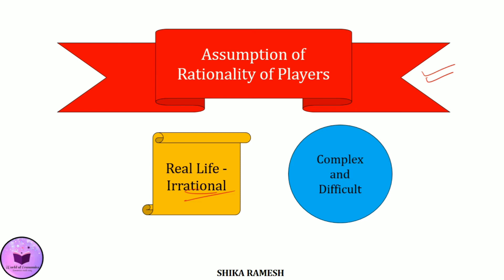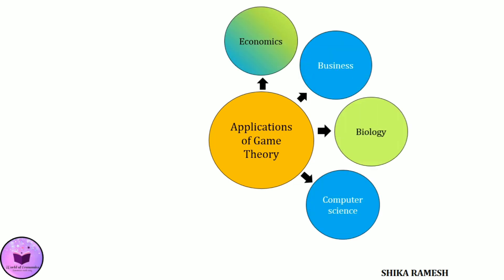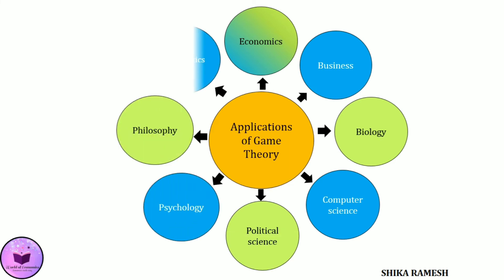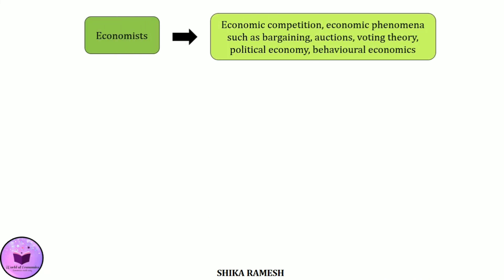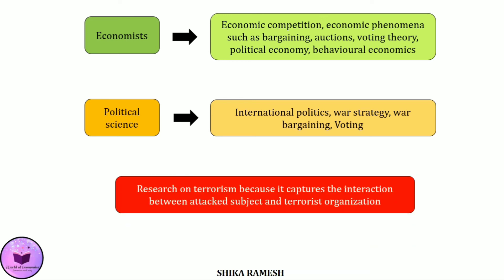Game theory is applied in a wide array of disciplines including economics, business, biology, computer science, political science, psychology, philosophy, and mathematics. Economists mainly use game theory to understand rational behavior among different economic agents. It is also widely used in political affairs, focusing on international politics, war strategy, war bargaining, voting, and so on. Game theory is even used as a useful tool for research on terrorism, because it captures the interaction between the attacked subject and the terrorist organization, as both are interdependent in nature.